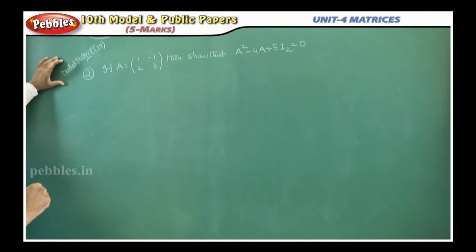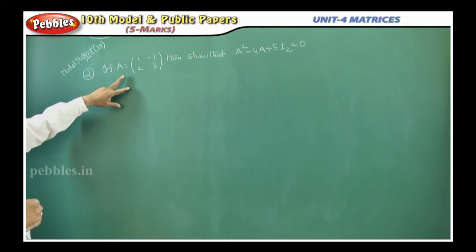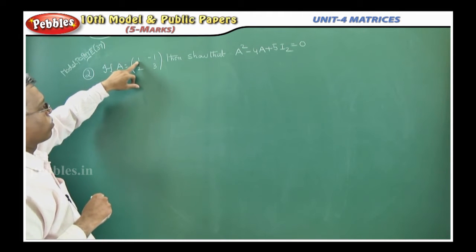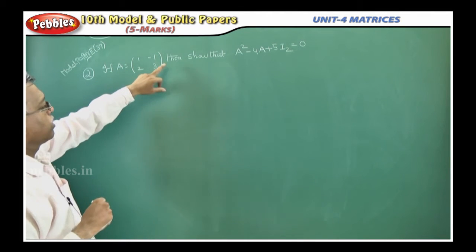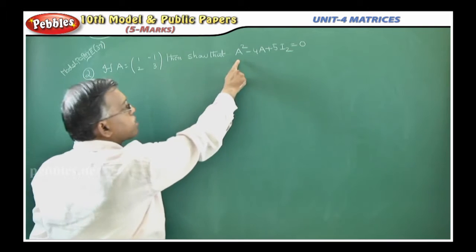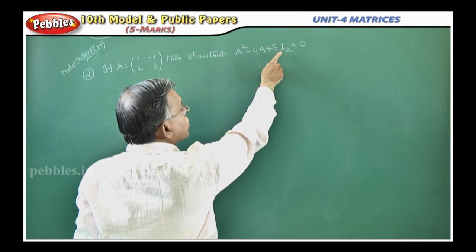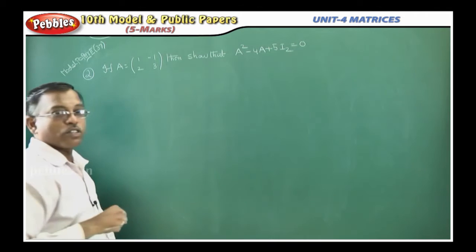There is another 5 mark question in model paper 2, question number 37 in your score book. If A is equal to the matrix 1 minus 1, 2, 3, then show that A square minus 4A plus 5I2 is equal to 0.